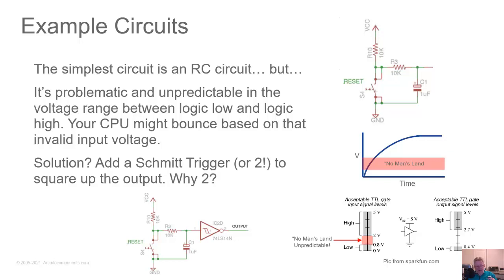A Schmitt trigger simply has a bit of hysteresis so that as that voltage level comes up and passes the threshold, it snaps the output to the logic state instead of sitting in the middle. These are typically inverters — 74LS14, 74HC14, 74HCT14, or an S14. Being inverters, that's why you might want to add two of them. If you have a reset circuit that starts low and goes high and you put an inverter on it, now you've got a reset circuit that starts high and goes low, which would be invalid for a Z80. So you use two Schmitt triggers to get a reset signal that starts low then snaps to high so the CPU can start and run.